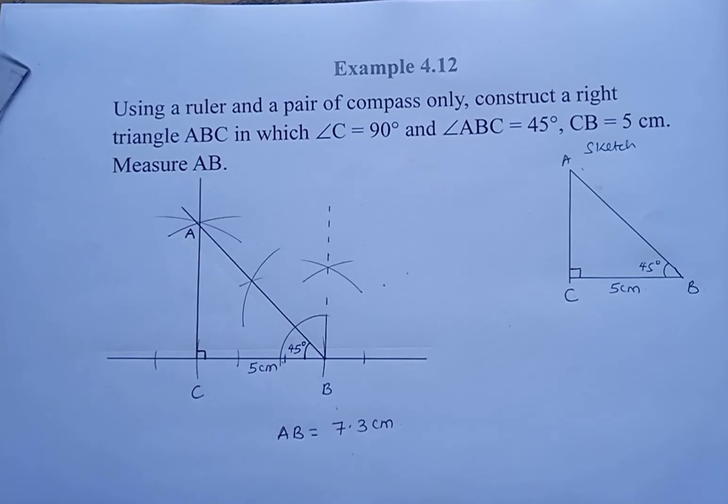Then we have an error of plus or minus 0.1. This means 7.2 is correct and 7.4 centimeters is also correct.